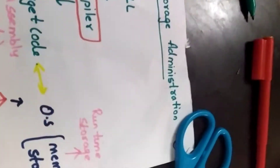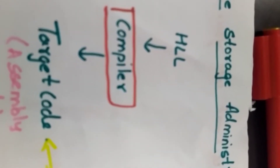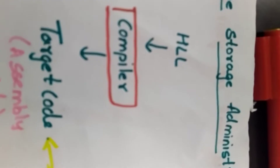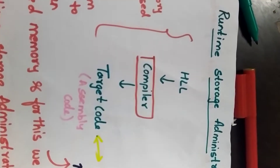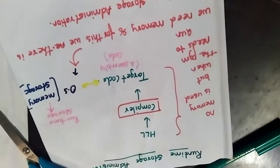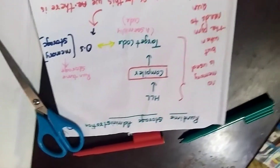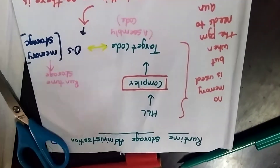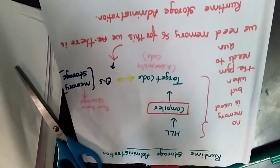Good morning. Let me start with our 4th unit. I have already started with the 4th unit in our last class and introduced you to the symbol table at that time. Now let us continue with the other topics of the same unit. As you can see here, the name of this topic is Runtime Storage Administration.